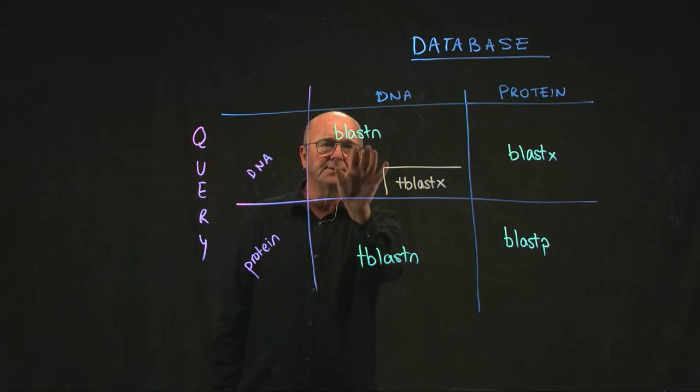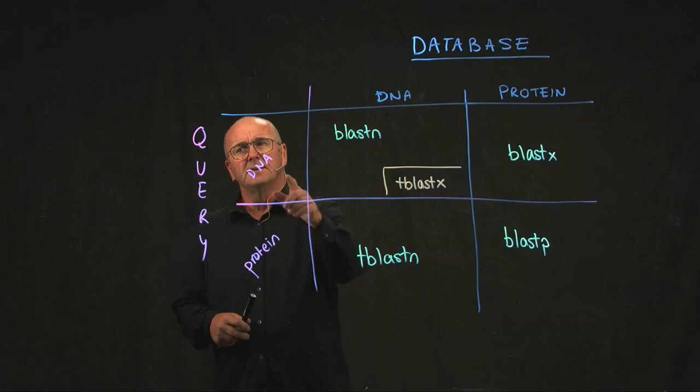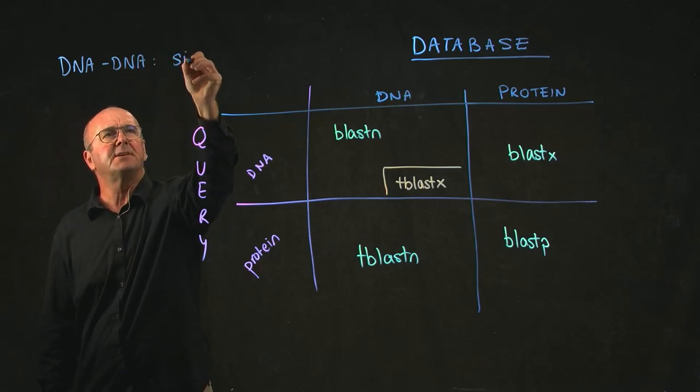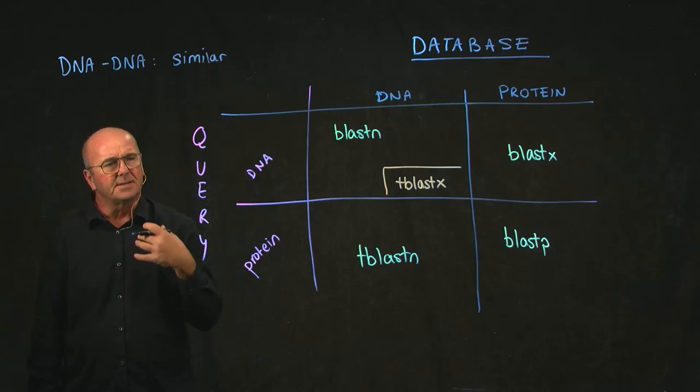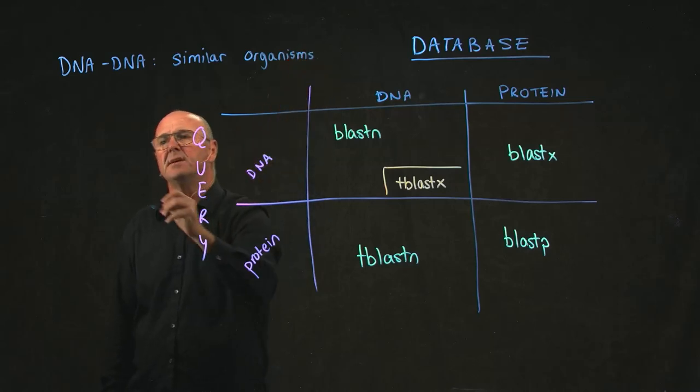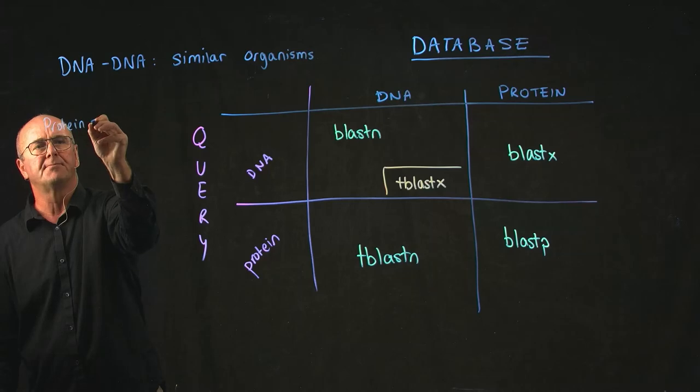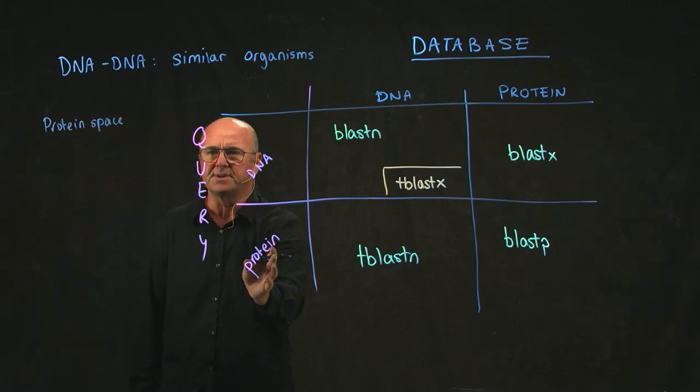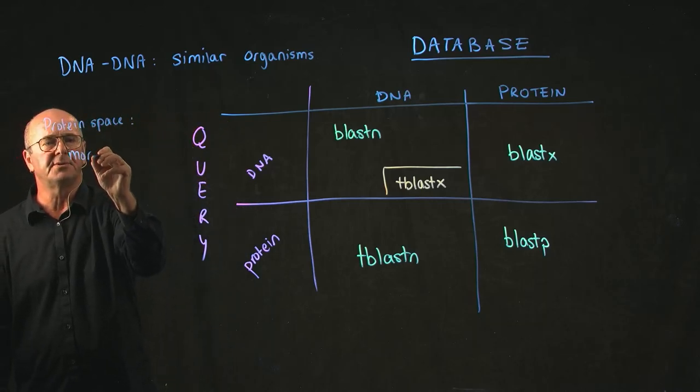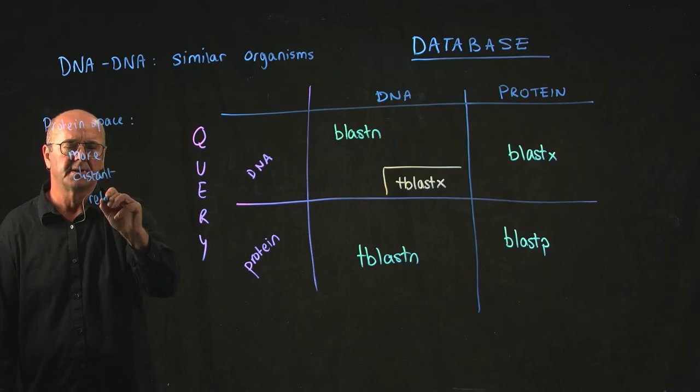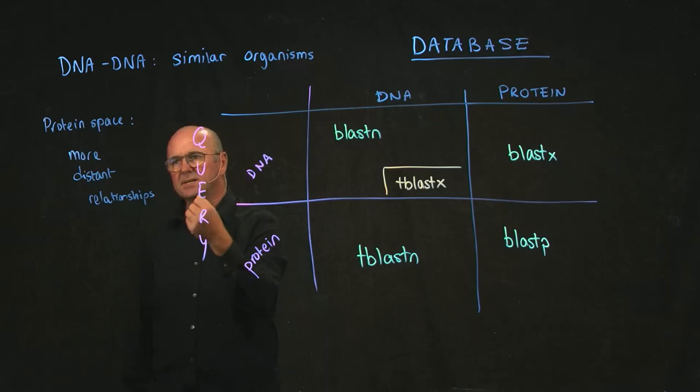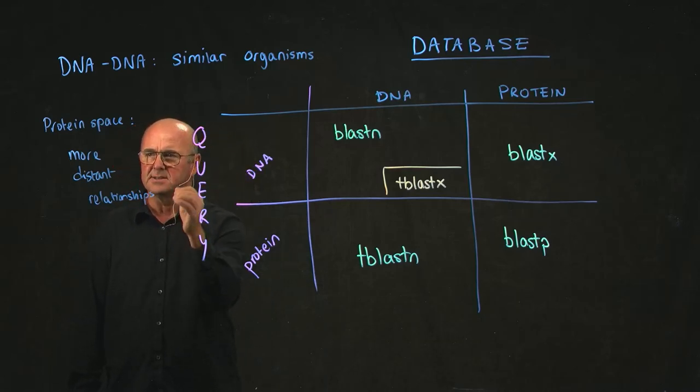The reason that you want to do these different comparisons is that if you're doing DNA to DNA queries, you're going to be looking for very similar things. Remember that DNA evolves a lot faster than protein does. So we're going to be looking for similar organisms. If we move into protein space, either by just having a protein query, having a protein database, or translating our DNA queries or databases, we can look for more distant relationships. Because as the DNA evolves very quickly, the protein sequences under selective pressure doesn't change quite so quickly as the DNA sequence does.